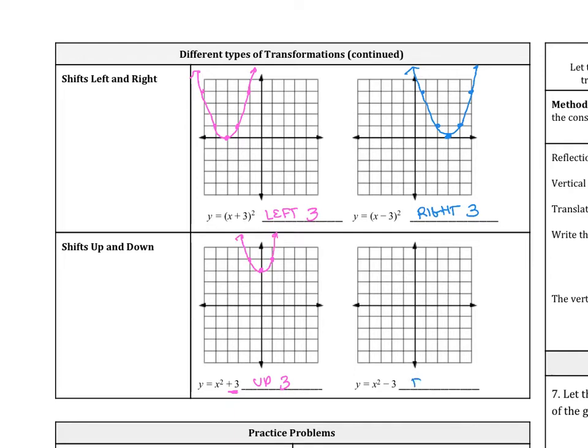Then here, if you have negative 3, that's going to go down 3. It's on the outside as opposed to this one on top, which was inside. So just recognizing those differences.